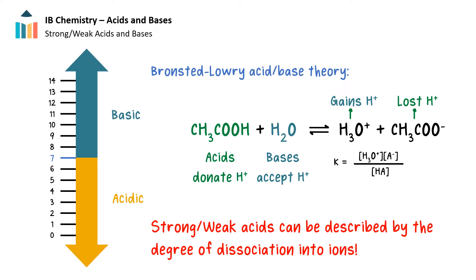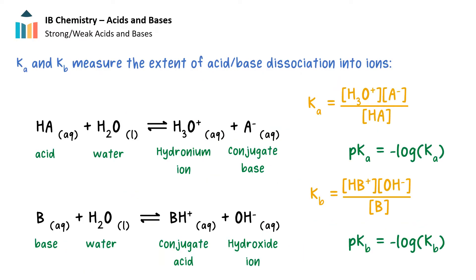Another way of describing the strength of an acid or base is understanding the degree to which the acid or base ionizes or dissociates to produce hydronium or hydroxide ions respectively. We can quantify the degree of dissociation of acids and bases into their ions with their dissociation constants.